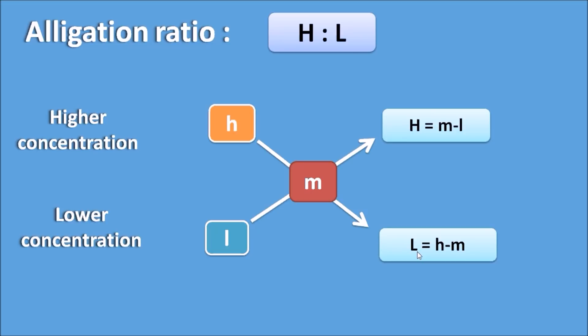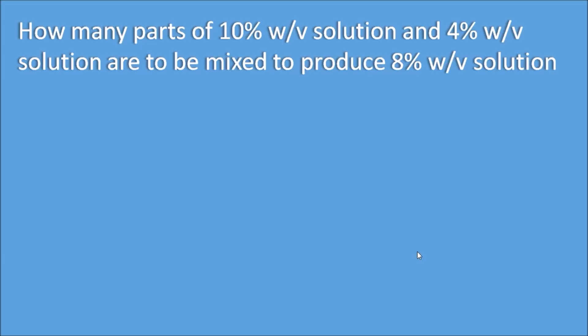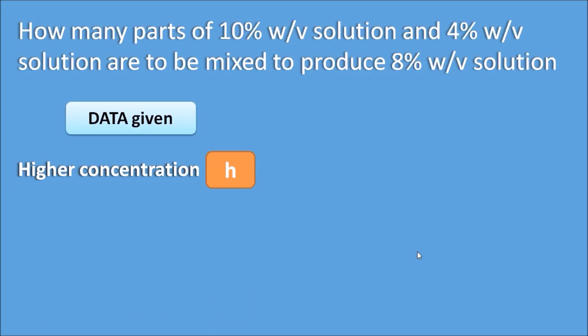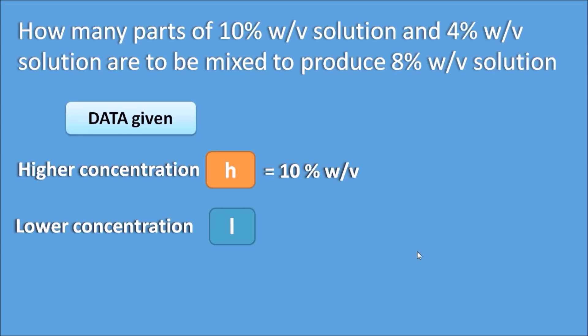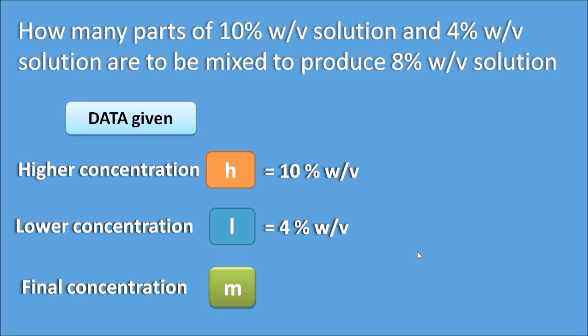For more clarity, let us take a practical example. How many parts of a 10 percent weight by volume solution and 4 percent weight by volume solution are to be mixed to produce an 8 percent weight by volume solution? Here the higher concentration H is equal to 10% w/v, lower concentration L is equal to 4% w/v, and the final intermediate concentration M is equal to 8% w/v.